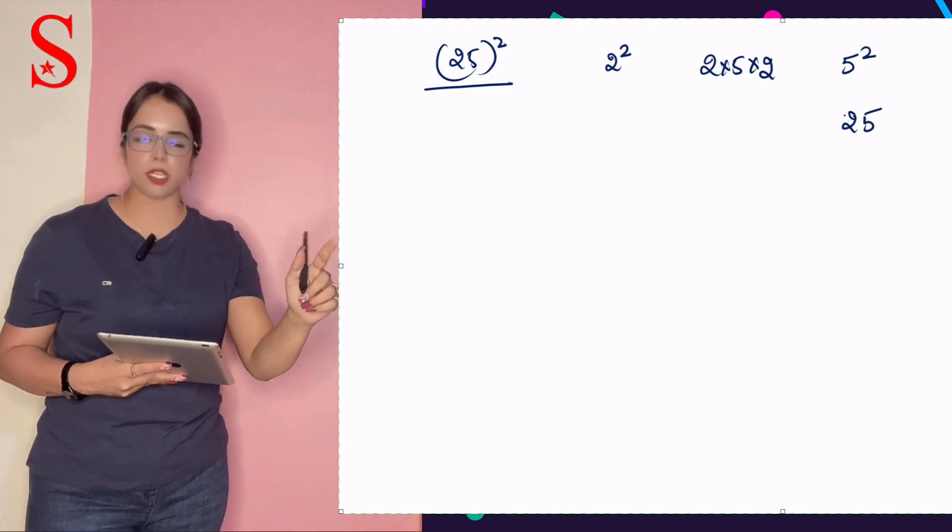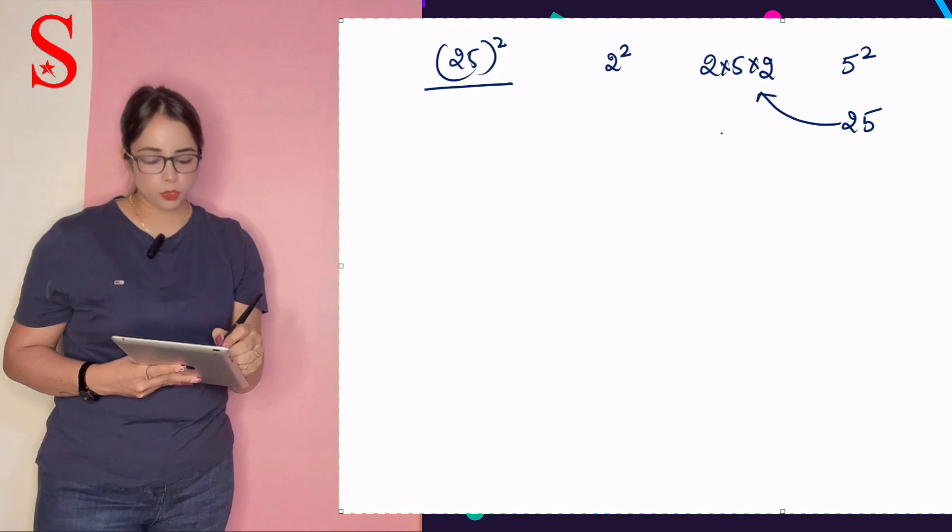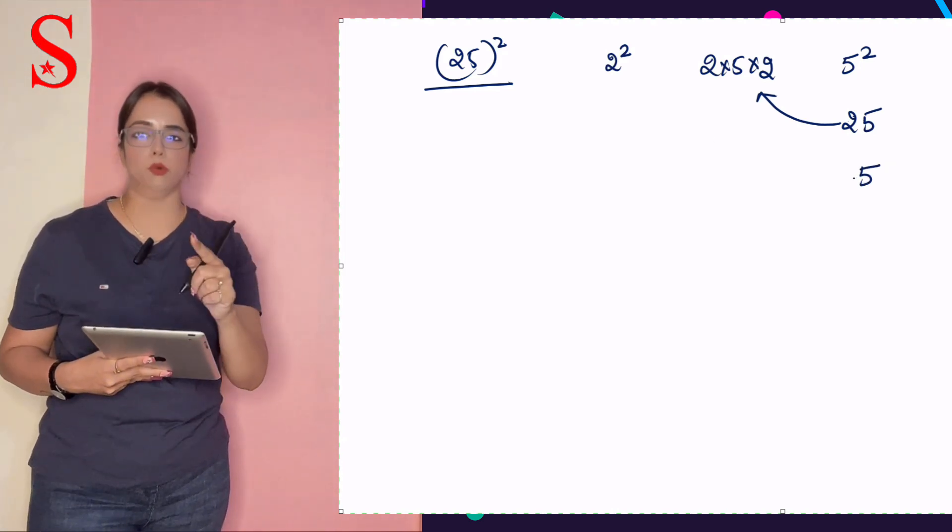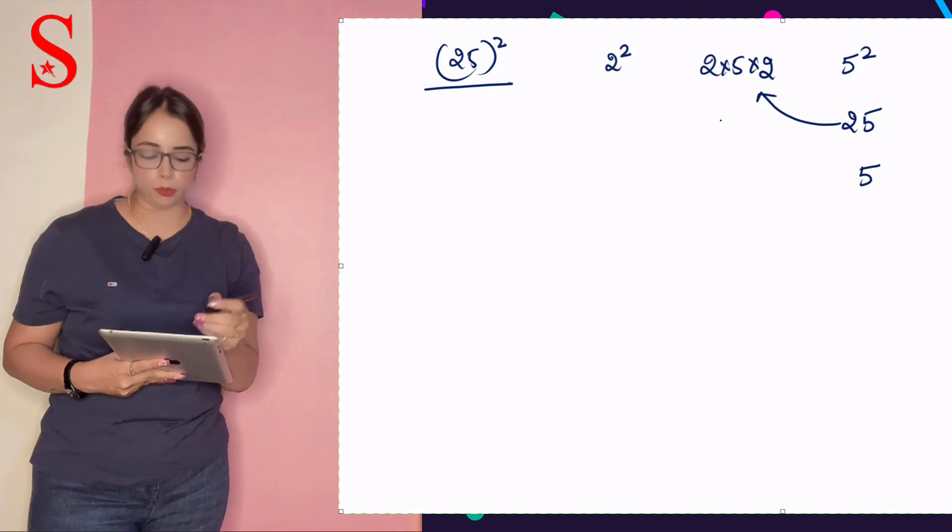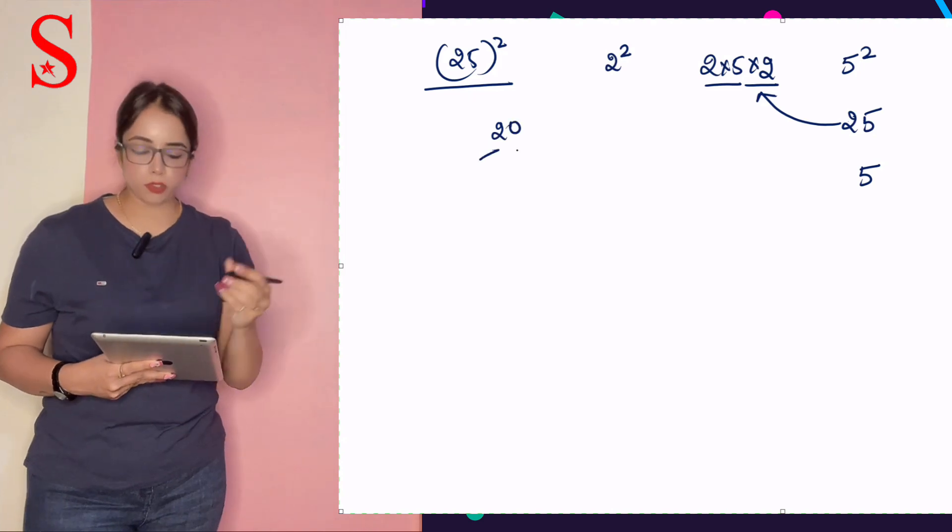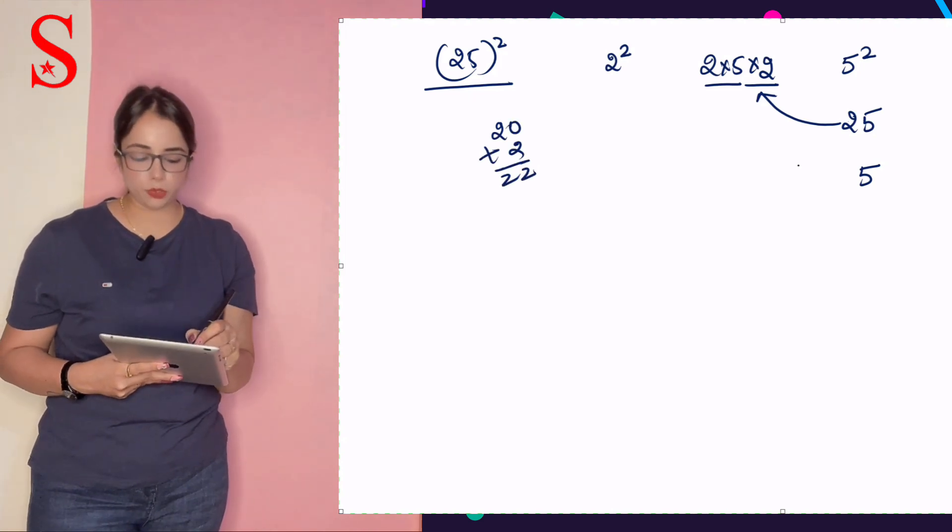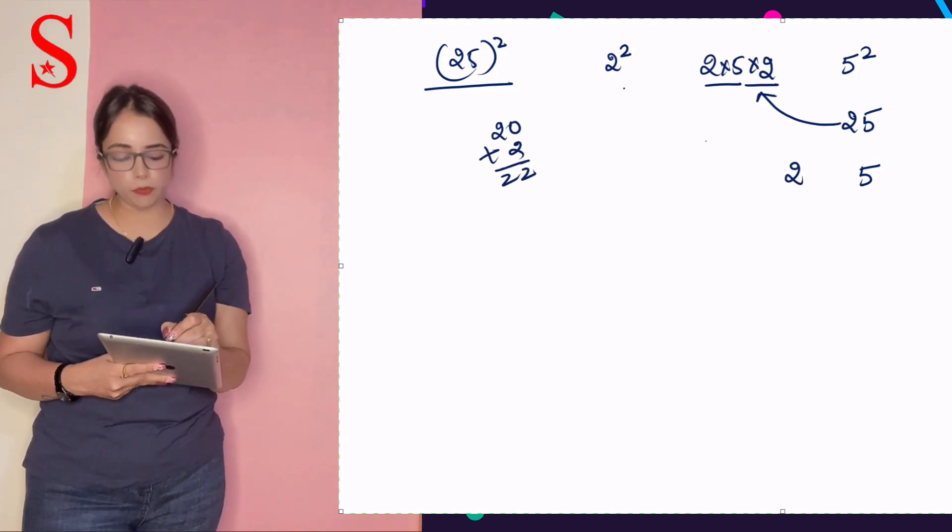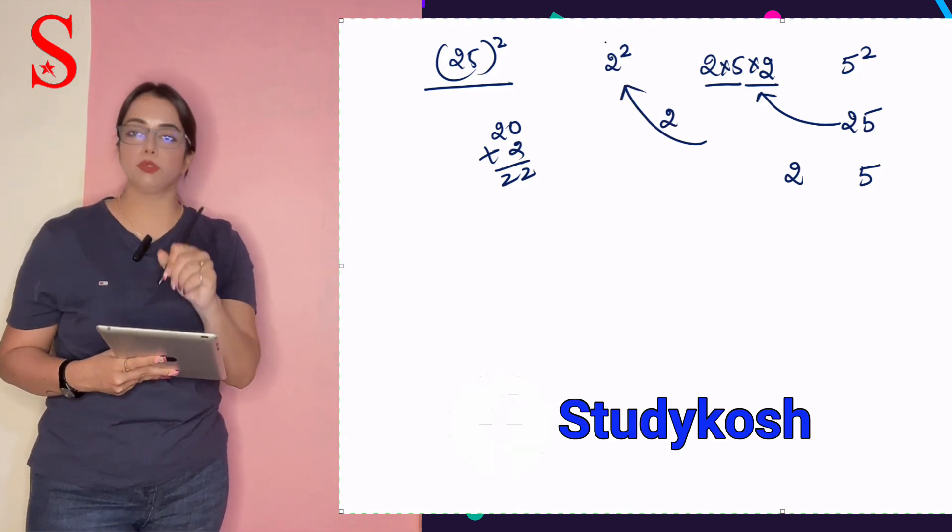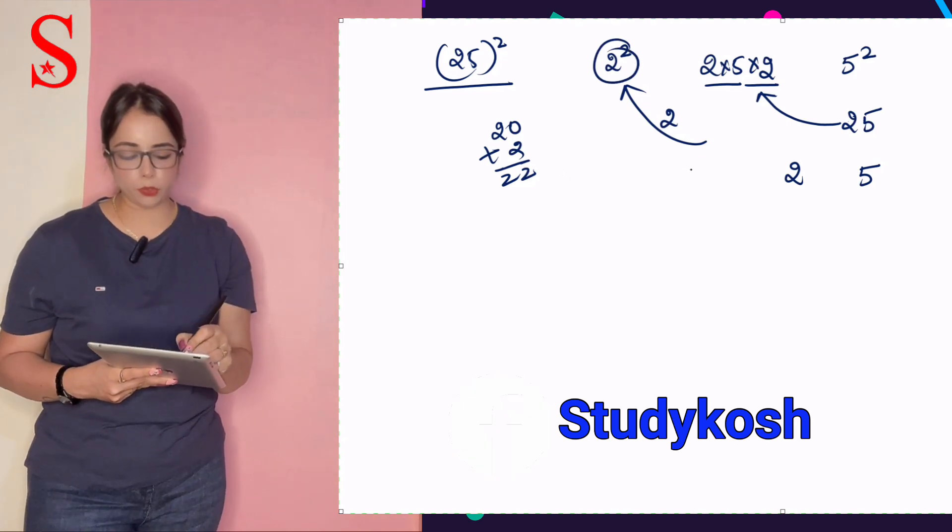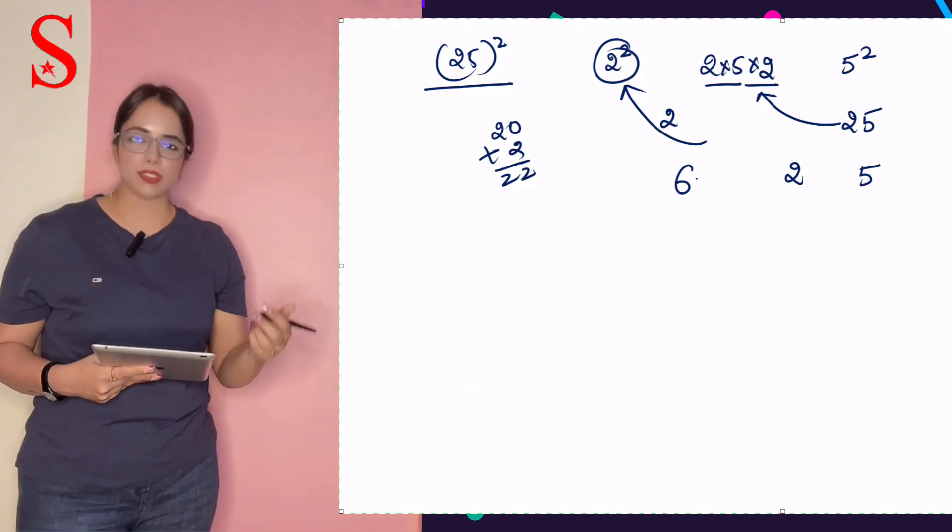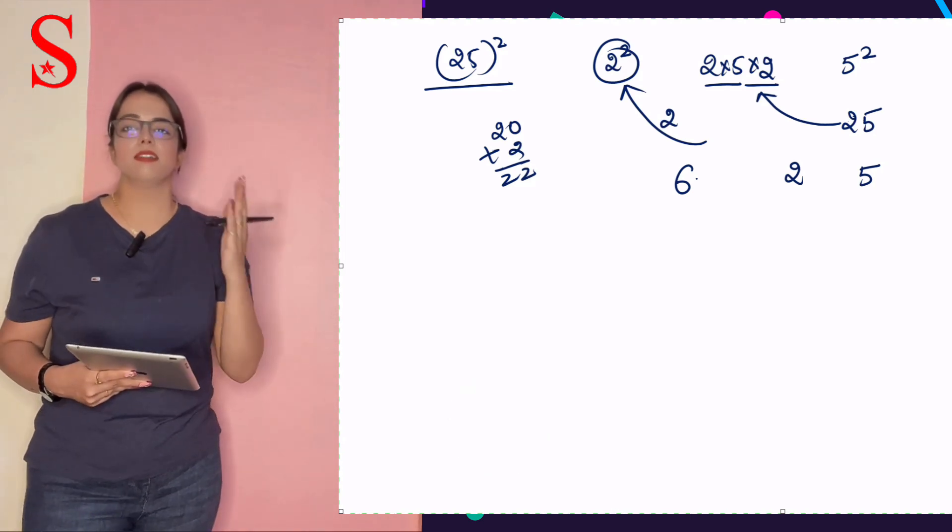Write the last digit and the next will be the carry to next number. So I am writing 5 here. 2 is the carry to next row. Now, 2 into 5 into 2. 2 into 5 is 10. 10 into 2 is 20. 20 plus 2 is 22. So I'll write 2 here and the remaining 2 will be the carry to the next row. Next, we have 2 square. 2 square is 4. 4 plus 2 is 6. What we got? 625. So the square of 25 is 625. Easy.